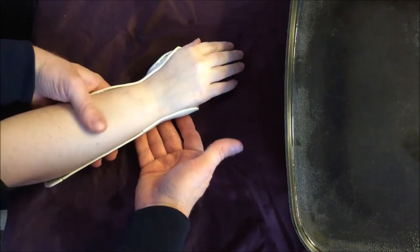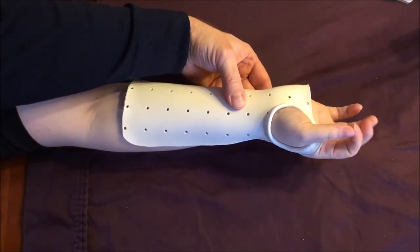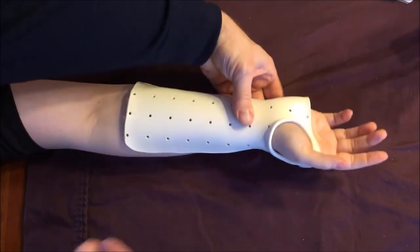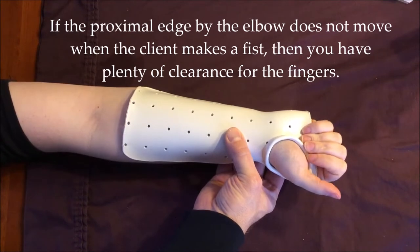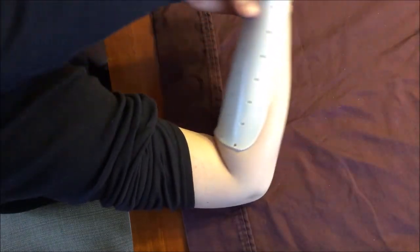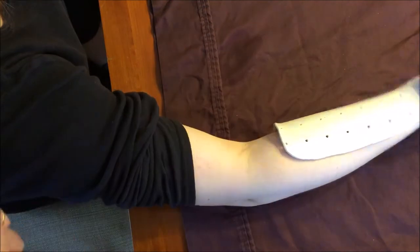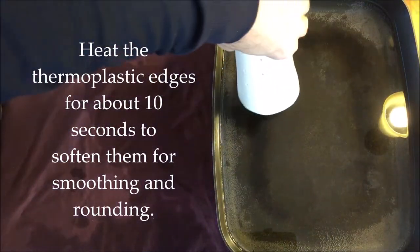We'll check our fit again. As you can see, now we're much better here, not wrapping too far around the dorsum at the wrist. Here you can see that we have good finger-to-thumb motion. Client can make a fist, and if you look at the proximal end of the orthosis, it doesn't move when they make a fist. And here you can see there's good elbow motion without the skin bunching up between the antecubital fossa and the proximal end of the orthosis.